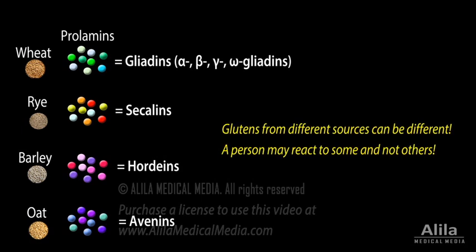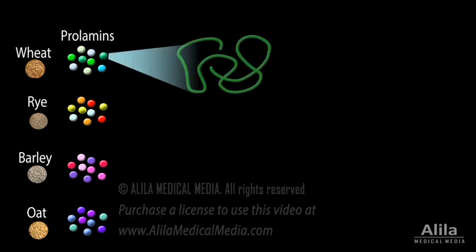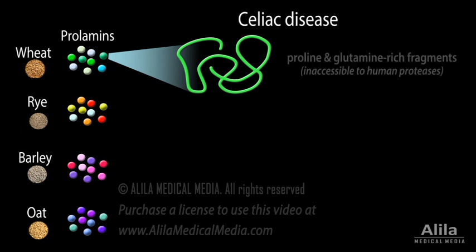Composition of a particular gluten also varies depending on growing conditions and processing technologies. Prolimins are the main causative agent of celiac disease. They are rich in the amino acids proline and glutamine, and are therefore highly resistant to digestion by enzymes of the gastrointestinal tract.